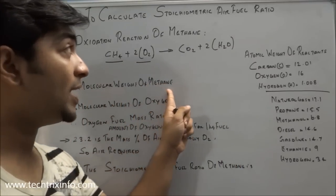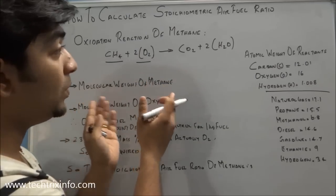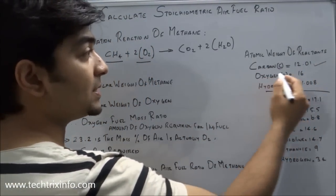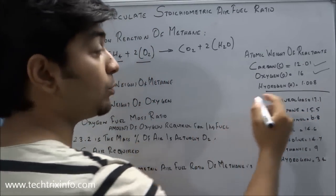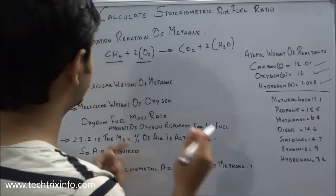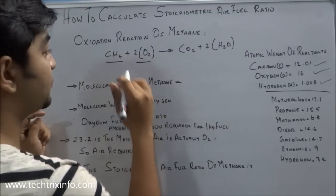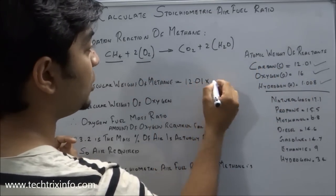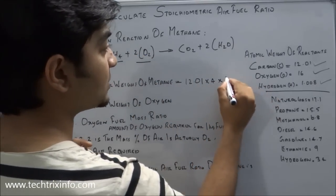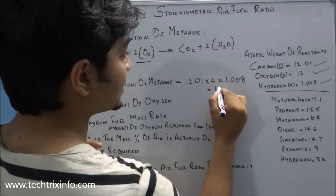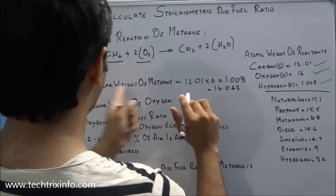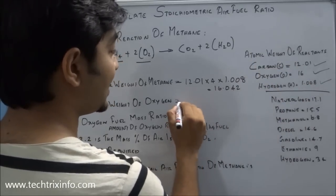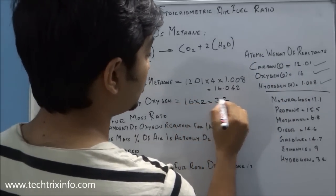Now let's calculate the molecular weight of methane. For carbon, the atomic weight is 12.01; for oxygen it is 16; and for hydrogen it is 1.008. For methane, CH4: carbon is 12.01, plus 4 × hydrogen (1.008), giving a molecular weight of 16.042. For oxygen, O2: 16 × 2 = 32, so the molecular weight of O2 is 32.